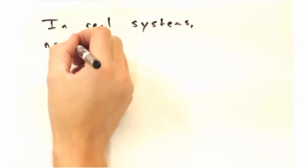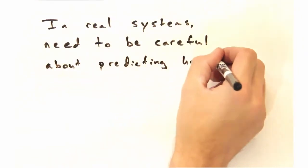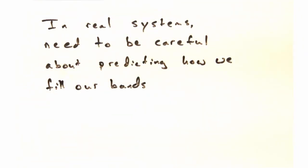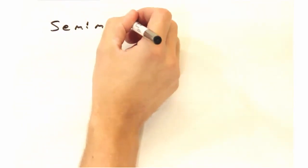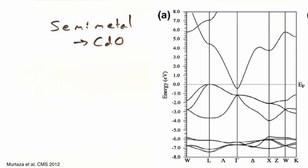So now we can see that in real systems, we need to be careful about predicting how we fill our bands. Okay. So what would a semi-metal look like? Well, cadmium oxide is a nice example of a semi-metal. Here we can see how the Fermi level splits between two bands. And we're calling it a semi-metal because there's no crossing of the two bands at the Fermi level. Exactly.